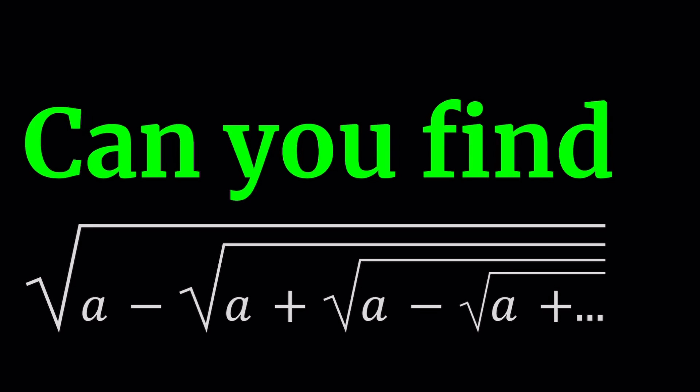Hello everyone. In this video we're going to be evaluating an infinite radical — a very interesting one. We have the square root of a, minus the square root of a plus the square root of a, minus the square root of a plus the square root of a, and so on. The signs alternate: we start with a minus sign, then a plus sign, then a minus sign — they just take turns. We are going to evaluate this infinite algebraic radical expression in terms of a.